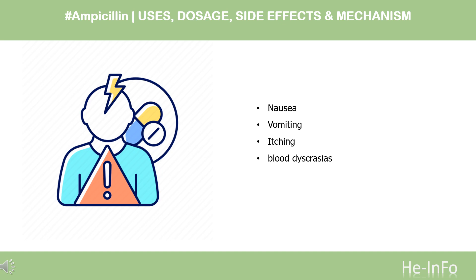Ampicillin is comparatively less toxic than other antibiotics, and side effects are more likely in those who are sensitive to penicillins and those with a history of asthma or allergies. In very rare cases, it causes severe side effects such as angioedema, anaphylaxis, and C. difficile infection, that can range from mild diarrhea to serious pseudomembranous colitis. Some develop black, furry tongue. Serious adverse effects also include seizures and serum sickness.